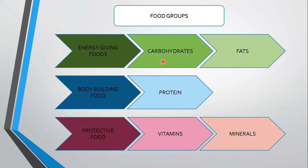Carbohydrates mainly provide energy to our body. Fats also give us energy. Foods containing fats and carbohydrates are called energy-giving foods. Proteins are needed for the growth and repair of our body. Foods that are rich in proteins are called bodybuilding food. Vitamins and minerals help in protecting our body against diseases, and together they are called protective foods.